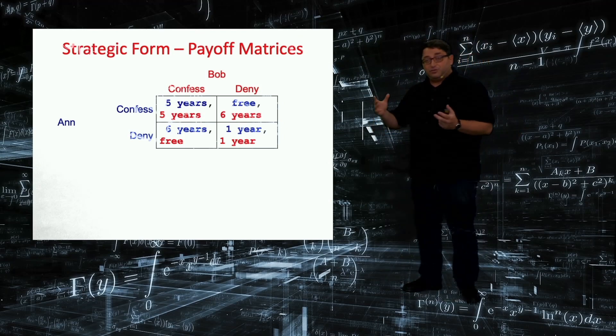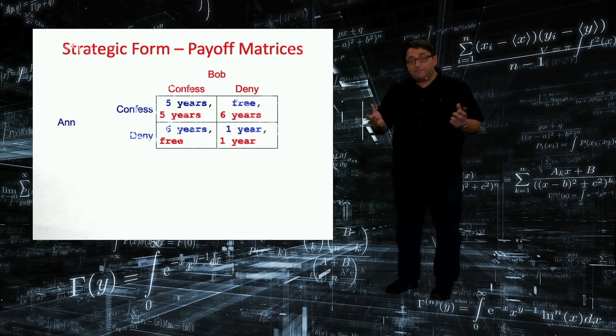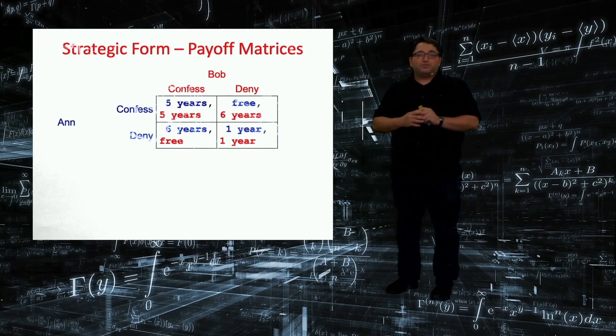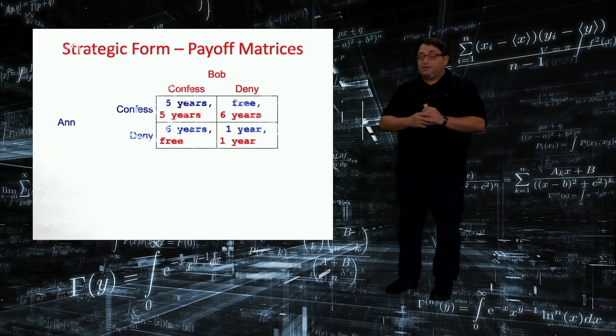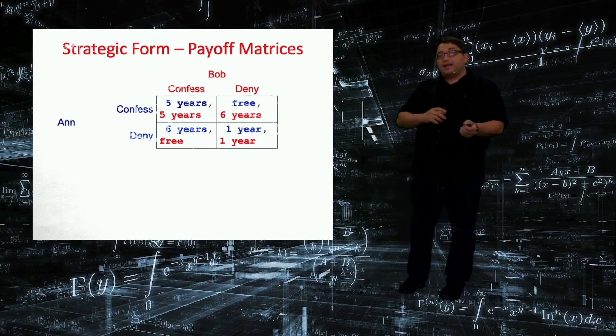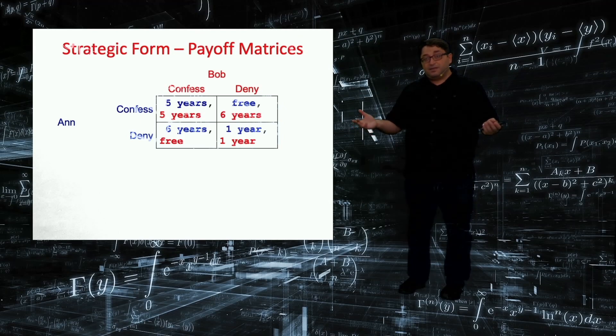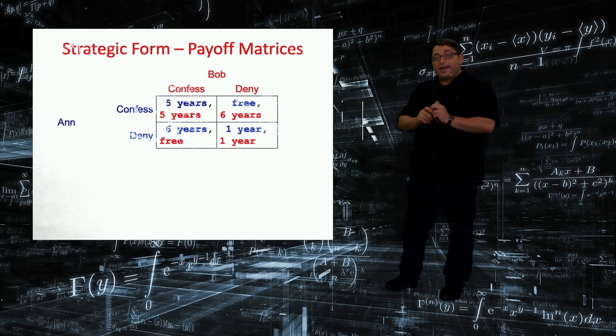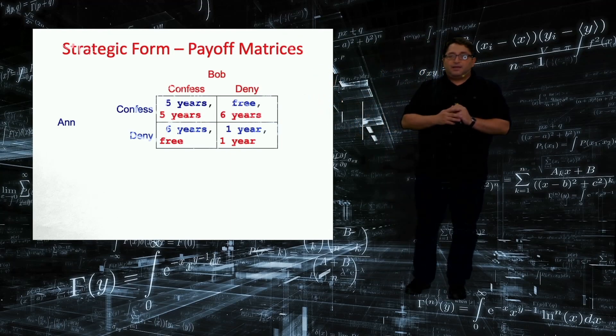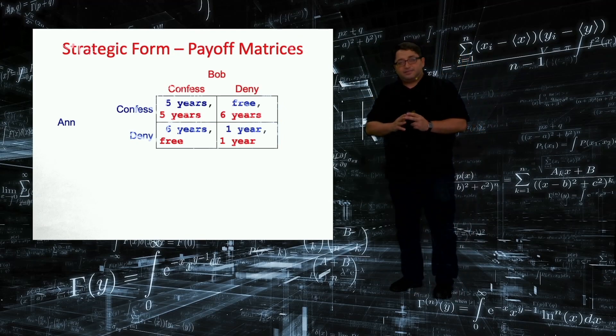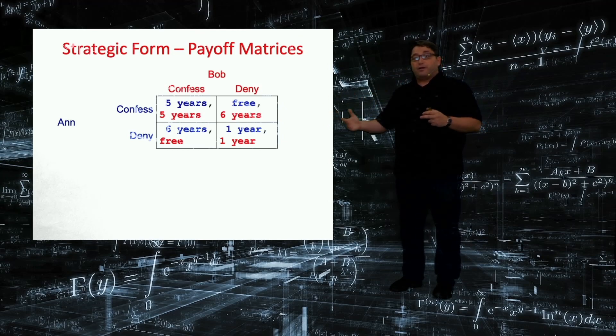So if both of them confess, you can see in the matrix that they will spend five years in prison. So I have two outcomes. The first one, five years, corresponds to the first player. And the second five years, the red one corresponds to the second player, Bob. So if Ann confesses and Bob does not, in that case, Ann becomes free and Bob spends six years. And the opposite corner where Ann denies and Bob confesses, the outcome will be exactly opposite. So Bob will be free. On the other hand, Ann spends six years in prison. And the remaining outcome where both of them denies, they will spend one year in prison.